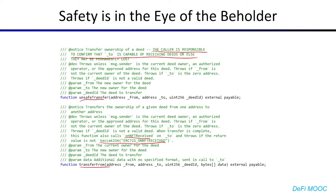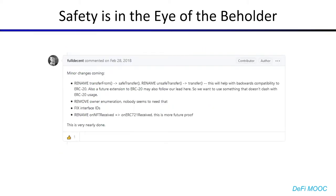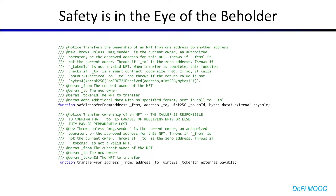So now the transferFrom function is made safer, because if a user tries to transfer it to a contract which wasn't expecting it, the transfer would fail. However, now we have a slight divergence from the ERC20 spec, where the transferFrom function could also fail if the recipient wasn't expecting it. As a result, one more change was made to rename transferFrom into safe transfer and unsafe transfer into transfer. This leads us to the ERC721 spec we're familiar with today, which includes the regular transferFrom, which does not perform any validation, as well as safeTransferFrom, which performs the safe transfer.